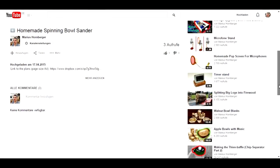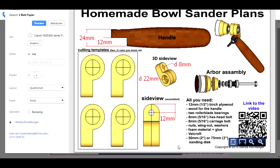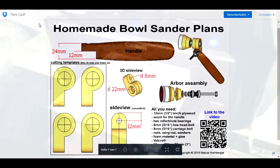You can find the link to the free downloadable plans in the description of this video. It will link you directly to the plans. From there you can download them or directly print them. The plans are made for an A4 page size, so you may have to adjust your printer settings.